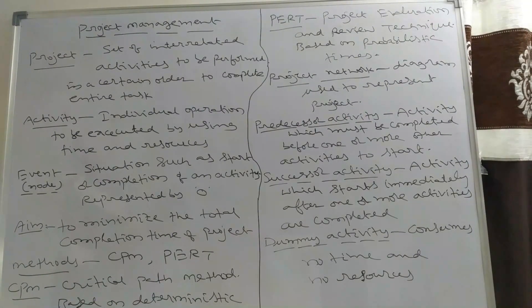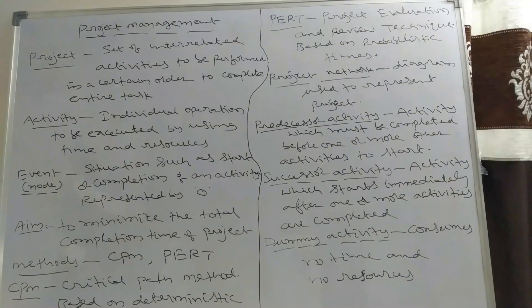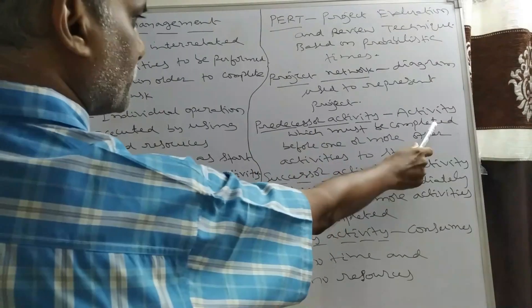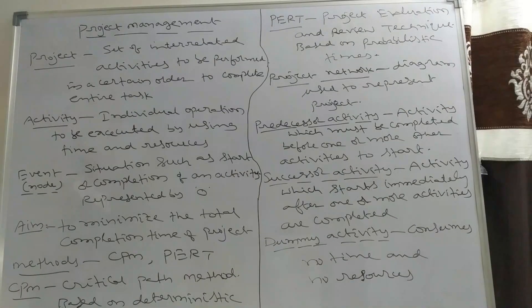In a network, we have different types of activities. For example, in the construction of a building, when we start construction of the foundation, it begins only after getting plan approval and making the site ready. So plan approval and site preparation are predecessor activities of the foundation activity. A predecessor activity is one which must be completed before one or more other activities can start.